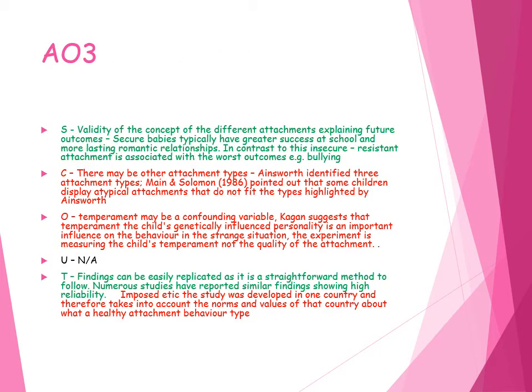In terms of evaluation: there is evidence that the concept of different attachment types can explain future outcomes, giving the study validity. Secure infants have greater success at school and more lasting romantic relationships, whereas insecure resistance is associated with bullying. However, there is contradictory evidence — some suggest there aren't just three attachment types, as some children don't fit into them. Atypical and disorganised attachments exist, which Ainsworth and Bell didn't take into account.